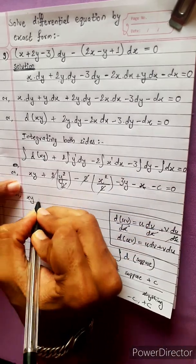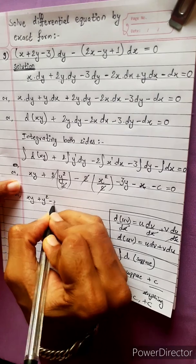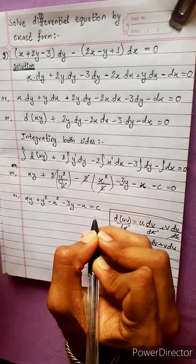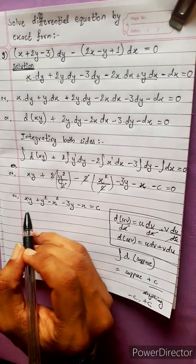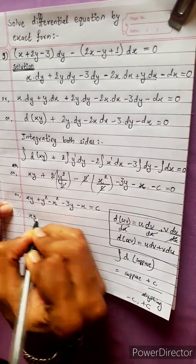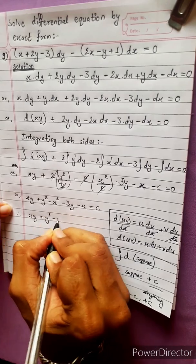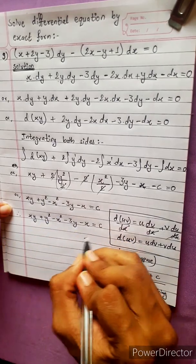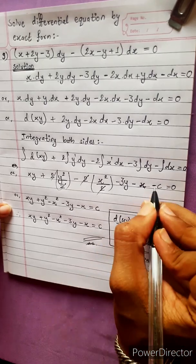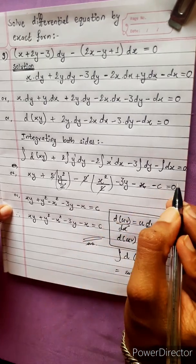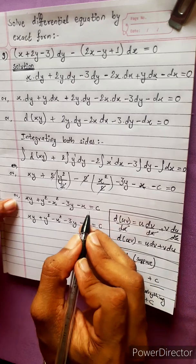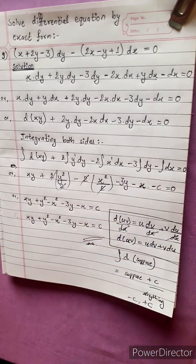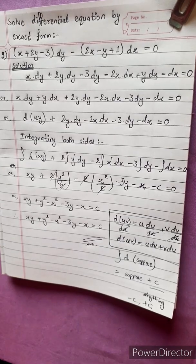The final answer is: xy plus y squared minus x squared minus 3y minus x equals c. We take this as the answer to the problem. So we write this plus c. The answer is complete. I'll see you next time.